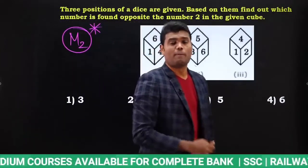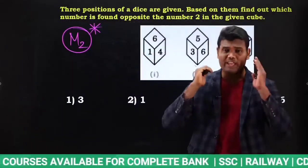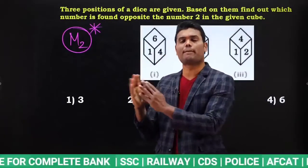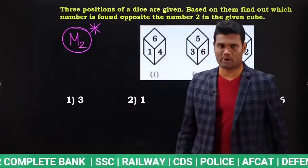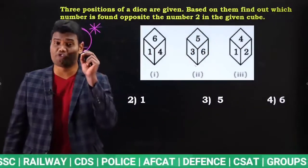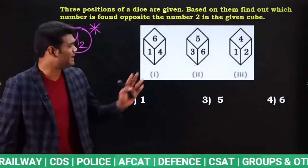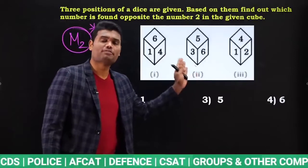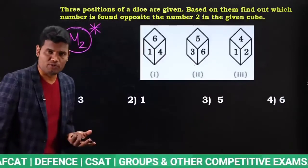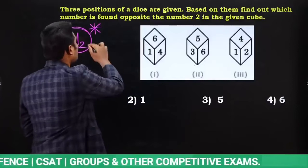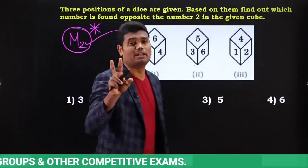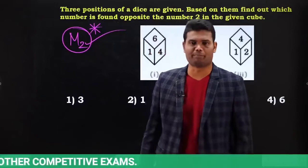Model 2 is preferred first because it is very fast and very accurate compared to Model 1. That is why we give first preference to Model 2 whenever questions have more than two views. If Model 2 is not applicable, then go for Model 1. Always save time in examination.